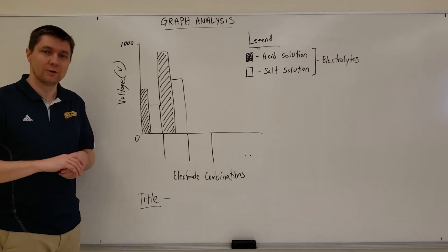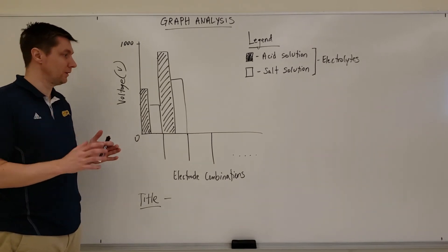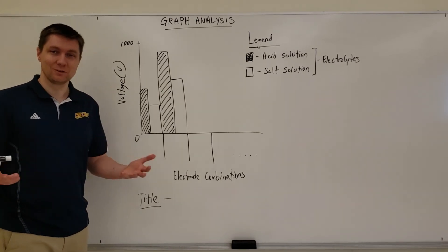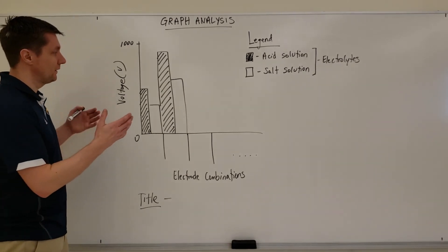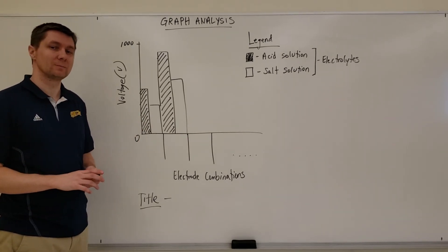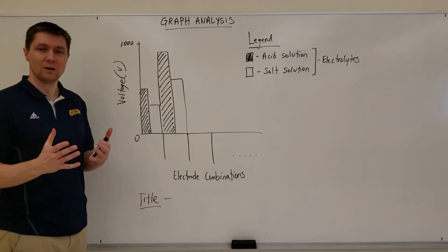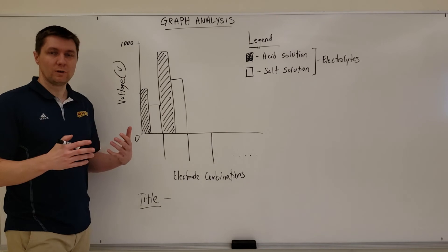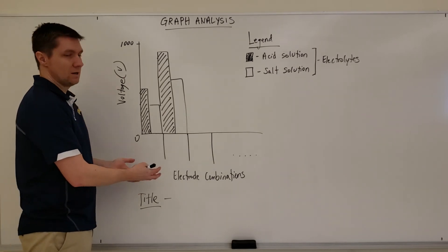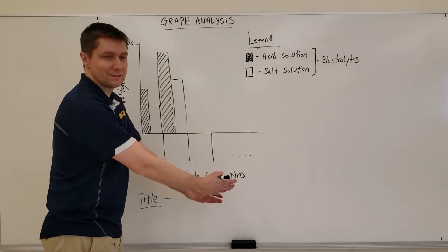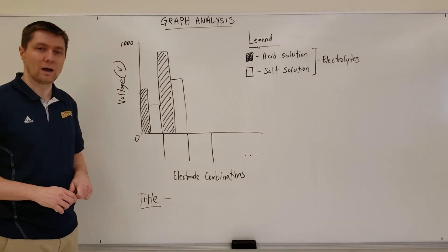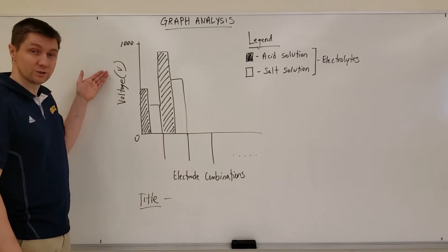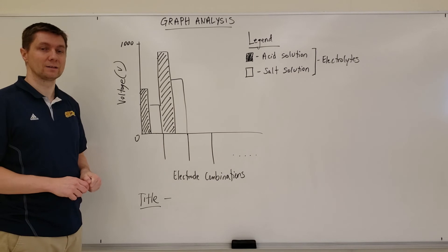This next part covers what you're supposed to do when asked to make a graph. We've done graphs a bit already, but just to reiterate: when we do graphs, we put the manipulated variable along the x-axis and the responding variable along the y-axis. Make sure those axes are labeled, and if they have units like voltage, put the units in brackets as well.